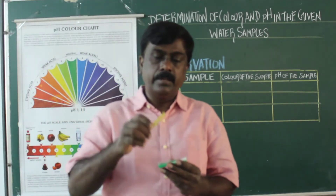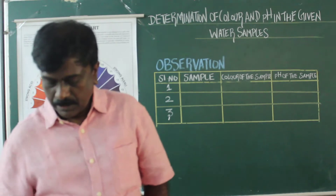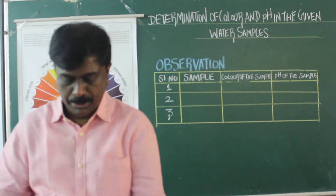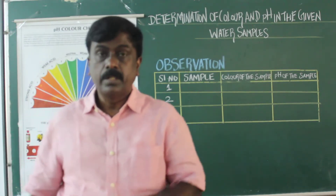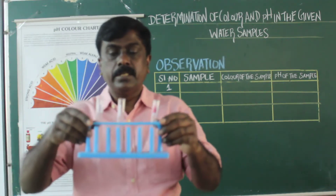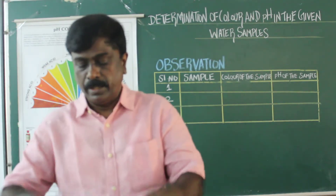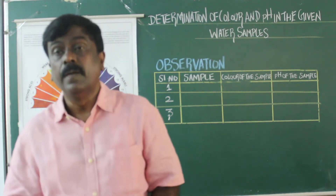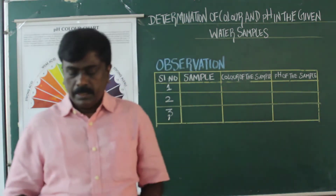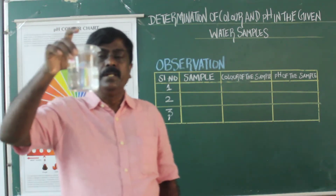First you need pH paper. Second, all the three solutions from letter 1, 2, and 3. Third, you need three test tubes with the same labeling as the solutions.